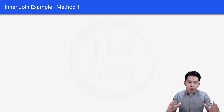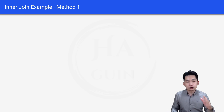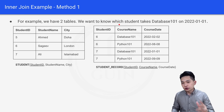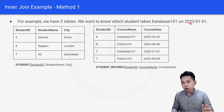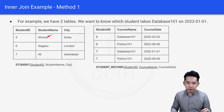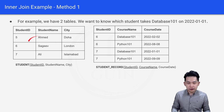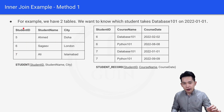Let's look at an inner join example to understand better. We have two tables and we want to know which student takes Database 101 on 20220101. The first table is the student table, which has student ID, student name, and city.